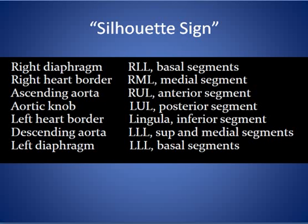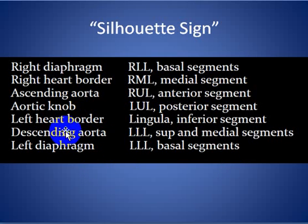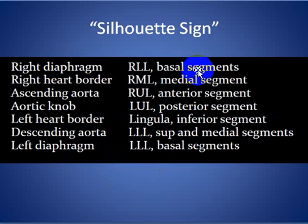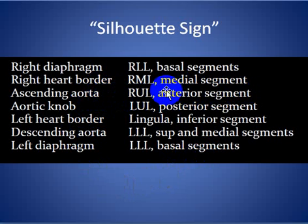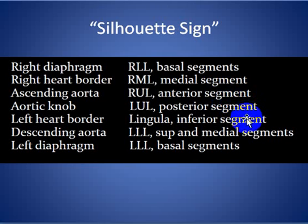Here are the main areas where we can apply the silhouette sign. If it obliterates the right cardiac border, the lesion is located in the middle lobe medial segment. If it obliterates the left heart border, it is located in the lingula inferior segment. If it obliterates the right hemidiaphragm, it is in the right lower lobe basal segments. If it obliterates the left hemidiaphragm, it is in the left lower lobe basal segments. If it obliterates the right upper cardiac border or ascending aorta, it is in the anterior segment of the right upper lobe. And if it obliterates the aortic knob or aortic arch, it is in the posterior segment of the left upper lobe.